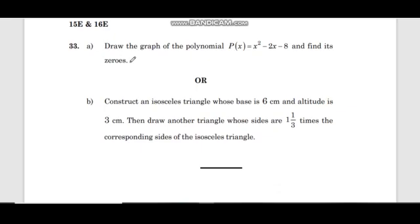Question 33: Draw the graph of the polynomial p of x equals x square minus 2x minus 8 and find its zeros. Then construct an isosceles triangle whose base is 6 cm and altitude is 3 cm. Then draw another triangle whose sides are 1 and 1 by 3 times the corresponding sides of the isosceles triangle.